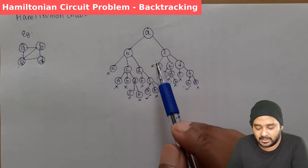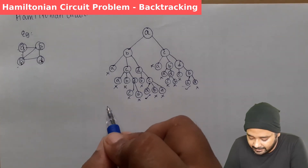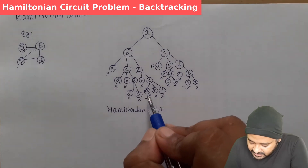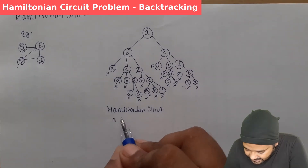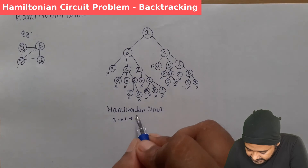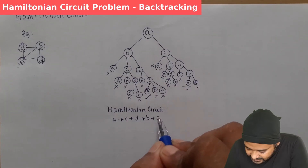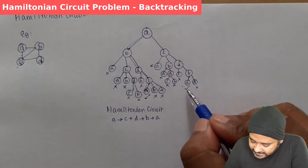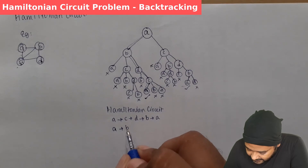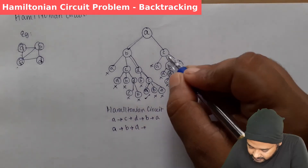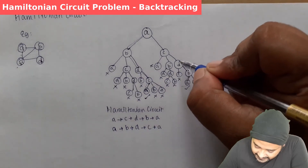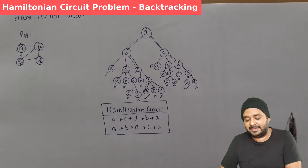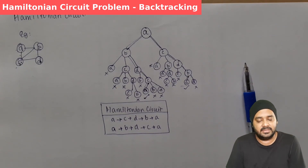Once after traversing all the nodes, we write down the opportunities for our Hamiltonian circuit. The two Hamiltonian circuits found are: A → B → D → C → A and A → C → D → B → A. These are the opportunities to construct a Hamiltonian circuit with the help of the backtracking approach. This is how the backtracking approach solves the Hamiltonian circuit problem.